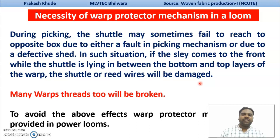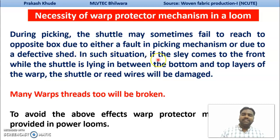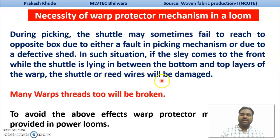What is the necessity of your warp protector mechanism in your loom? During picking, when the shuttle may fail to reach the other opposite shuttle box, that could be due to a fault in your picking mechanism or due to defective shed formations. Under these situations, if the shuttle fails to reach the other shuttle box, the shuttle remains in between your top and bottom layer of your warp. That will cause the reed wire points and shuttle to be damaged, causing many warp end thread breakages.